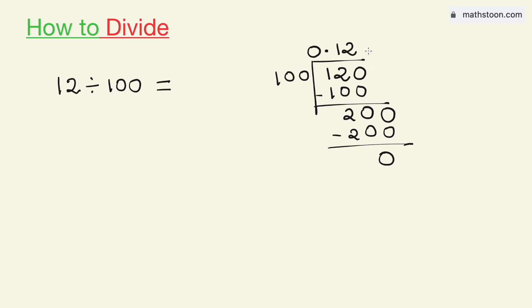As we have got the number zero we will stop. Therefore 12 divided by 100 is equal to 0.12 and this is our final answer.